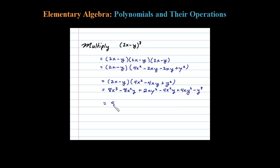Now it's just a matter of collecting up like terms to finish this off. 8x cubed I'll just bring that down. Notice here I have 8x squared y minus 4x squared y.